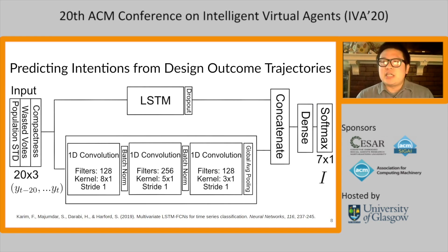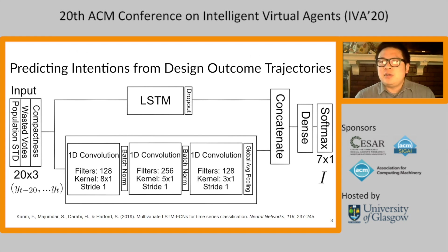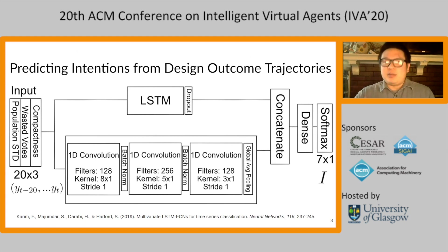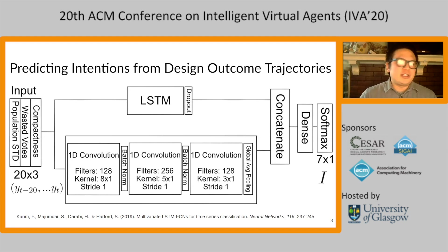To do this inference, we adopt a hybrid fully convolutional and LSTM network, taken from current work on classifying time series with deep networks. Note that this is a multi-label problem — we have three possible intentions and a trajectory could be associated with more than one. So we treat this as a multi-class problem over the seven different non-empty combinations of intentions, with the network output being a softmax over those seven combinations. The input is a trajectory of design outcomes using a 20-step window, where each design outcome is three-dimensional.